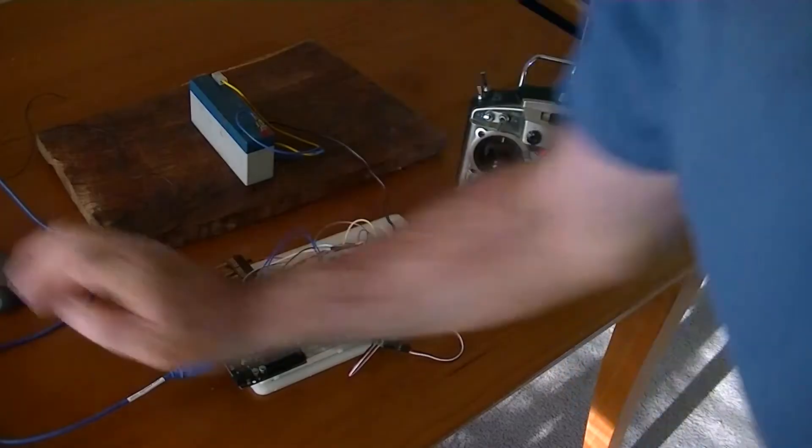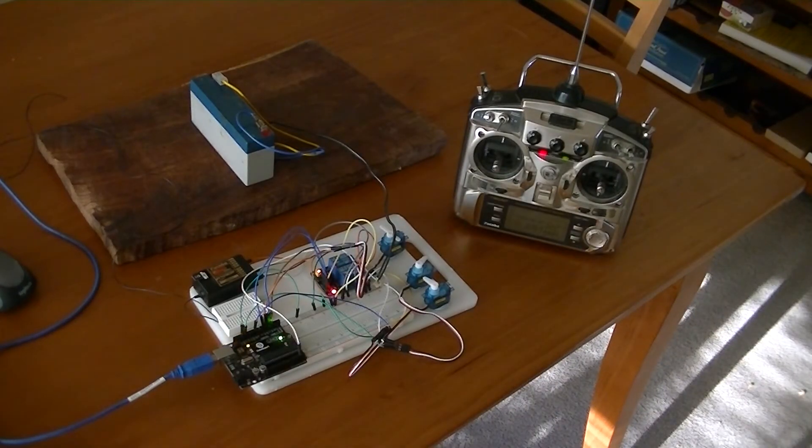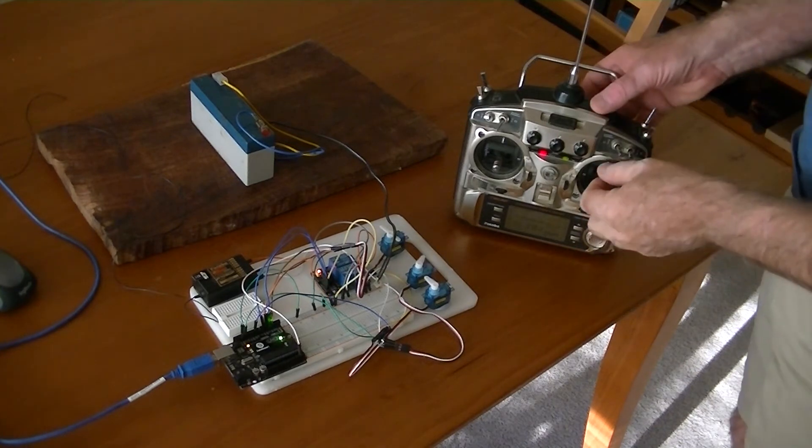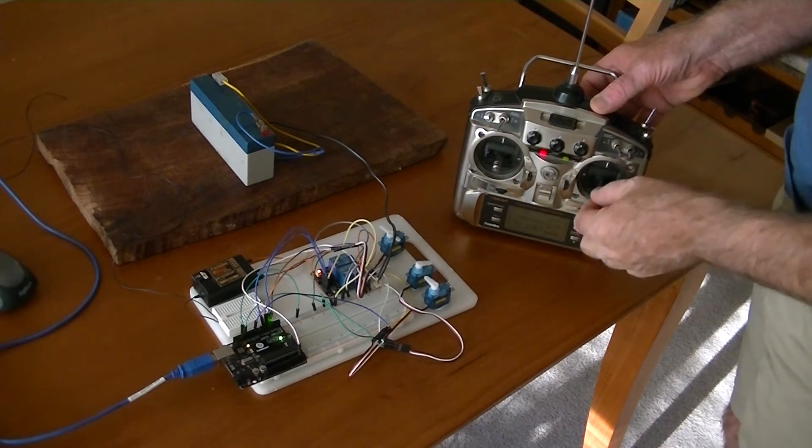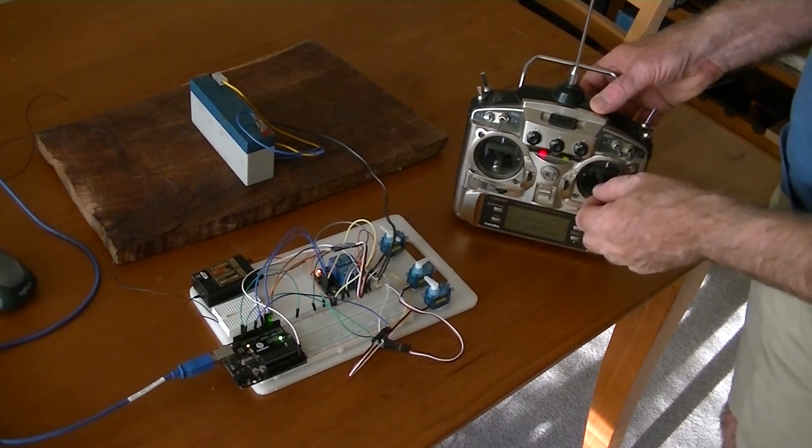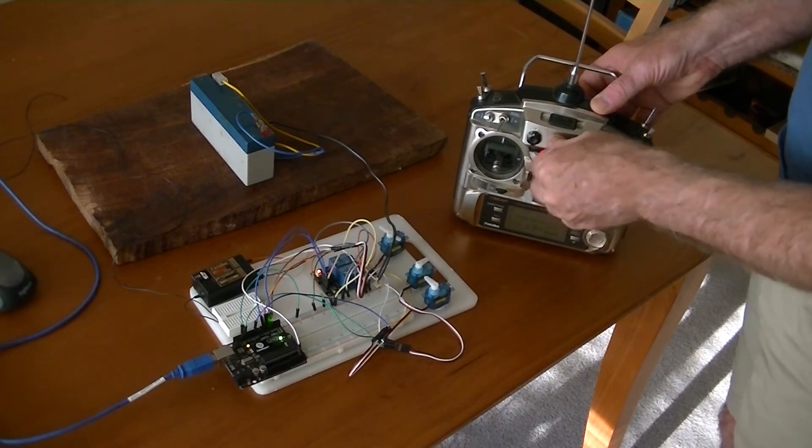So basically of those servos, one is the ballast, one is the hydroplane, and one is the retract servo. So when I turn this on, it goes through the initial routine, which is it turns the retract servo on. It makes sure it's open and then it turns it off so that the retract servo is no longer working.